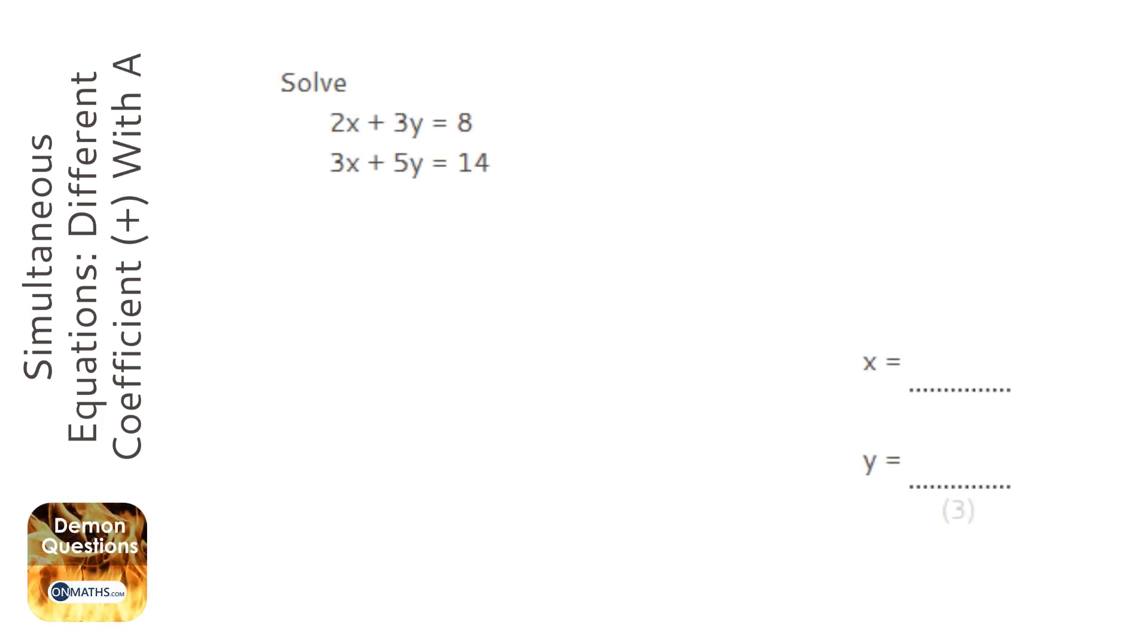Okay, so we've got a pair of simultaneous equations, and what we notice first of all is the coefficients of the x are different and the y are different as well. So we need to make them the same.